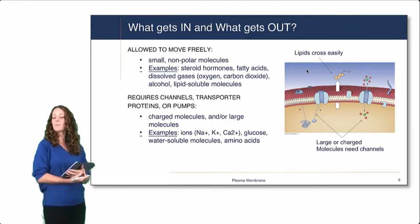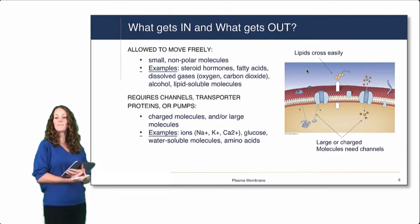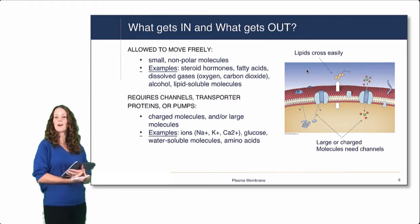What requires channels, transporter proteins, or pumps and cannot move freely through the membrane? That would be charged molecules or large molecules. Examples include small ions — sodium, potassium, calcium — glucose, and other water-soluble molecules such as amino acids. To summarize: small, nonpolar molecules can move through the plasma membrane freely, while other molecules will require channels, transporter proteins, or pumps. We'll cover that more when we talk about membrane transport.